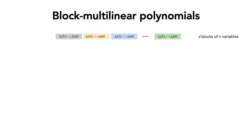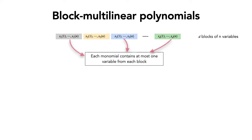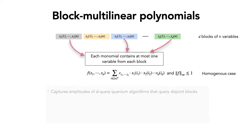For a homogeneous polynomial, you choose one index from each block to form each monomial, and the coefficients are indexed by tuples of indices chosen from each block. We care about such polynomials that are bounded. The reason we care is that such polynomials capture amplitudes of quantum algorithms that query disjoint blocks — in the first query the algorithm makes a superposition query to one part of the input, and so on through the blocks, then makes a measurement. Such algorithms are represented by block multilinear polynomials.